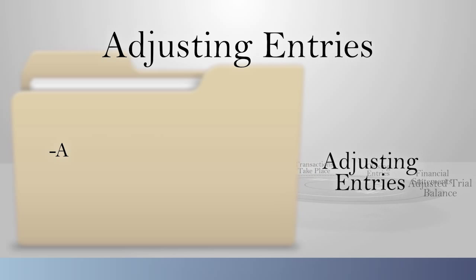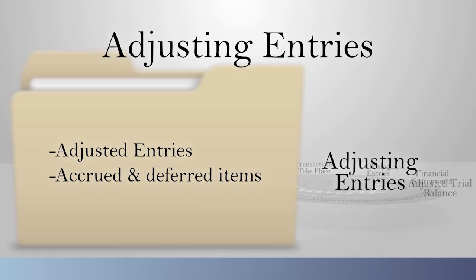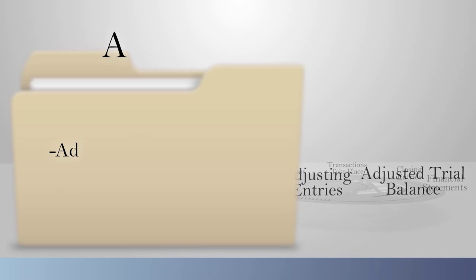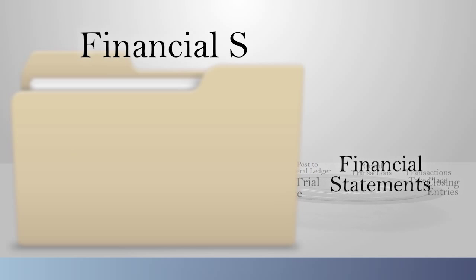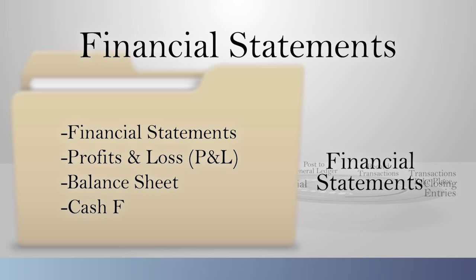If you're off, you have to do some adjusting entries, or you may have other month-end adjustments to make. After you make all your month-end adjustments, you print an adjusted trial balance, again making sure you're in balance and your debits equal your credits. Once you're in balance, you can go ahead and print your financial statements: your profit and loss, your balance sheet, and your cash flow.